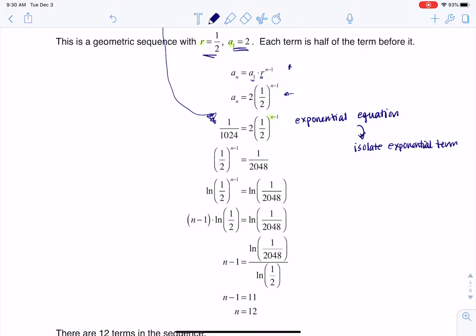And in order to isolate the exponential term, that means I really just want to get the 1 half raised to the n minus 1 power. I just want to get that by itself. So I'm going to divide both sides by 2. And if I take 1 over 1,024 and I divide it by 2, the 2s are going to cancel out here. When I take 1 over 1,024 and I divide by 2, that's like multiplying by 1 half and that's 1 over 2,048.